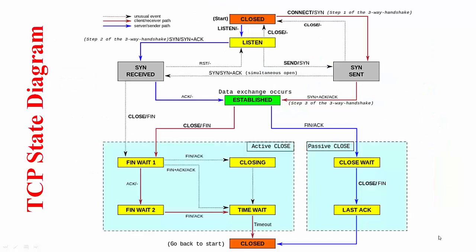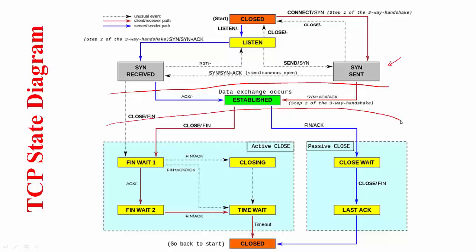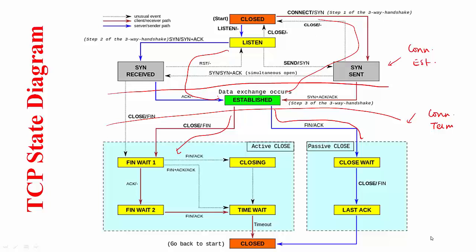This figure captures the TCP state diagram. It looks a bit complex but it is really not. This portion corresponds to connection establishment and this portion corresponds to connection termination. The blue line represents the server path and the red line represents the client path. Both start with the closed state. The server starts listening, while the client calls the connect function — as a consequence, the SYN packet gets sent. In this representation, X slash Y means X is the cause and Y is the response. The server is now in the listen state and the client is in the SYN sent state.